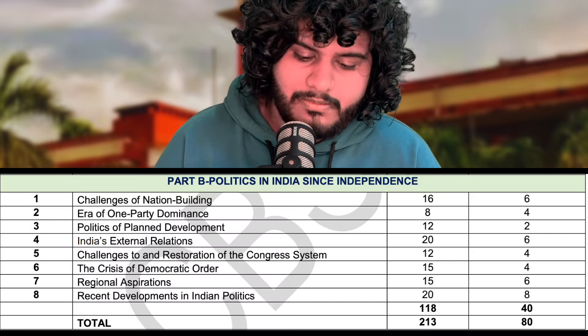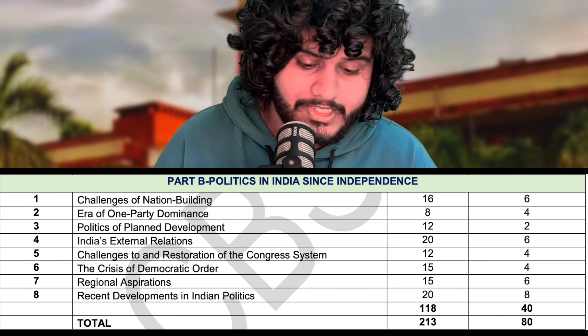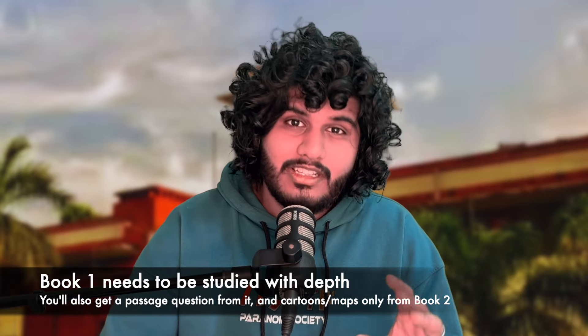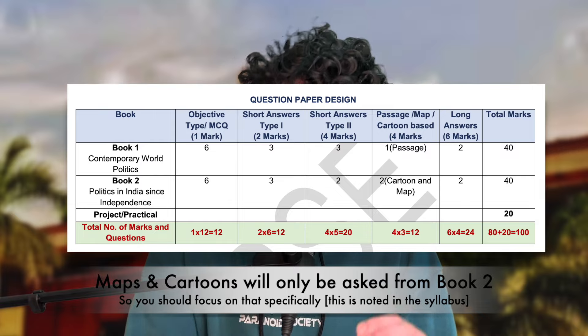In Book 2, 6-mark questions can only be asked from chapters like Challenges to Nation Building, India's External Relations, Regional Aspirations, or Recent Developments in Indian Politics — which is the most major chapter, carrying 8 marks. Most chapters in Book 2 are not eligible for a 6-marker, so we focus on short and medium-length questions — 2 or 4 markers, or cartoons.